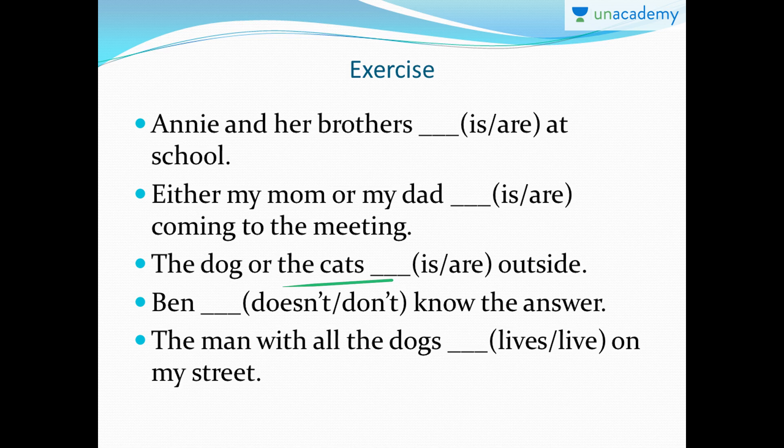'Ben doesn't know the answer.' I cannot say 'Ben don't know the answer' — it is 'I don't,' 'you don't,' but 'he or she doesn't.' So 'Ben doesn't know the answer.' Next: 'The man with all the dogs lives on my street.' We are talking about 'the man,' so the subject is singular: 'the man with all the dogs lives on my street.'